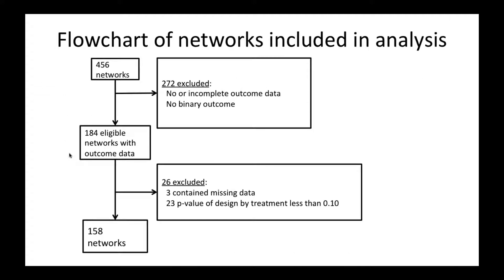The database had 456 networks. We excluded 272 because either the outcome data was missing or the primary outcome wasn't binary, and an additional 26 were excluded because either there was some missing data or it appeared there was inconsistency in the network. This left us with 158 networks for our analysis.